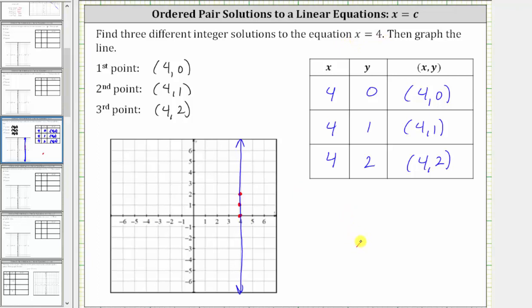And any equation in the form of x equals c will be a vertical line passing through c on the x or horizontal axis. I hope you found this helpful.